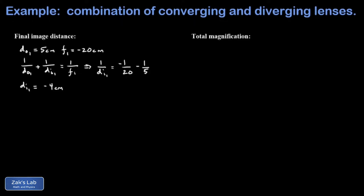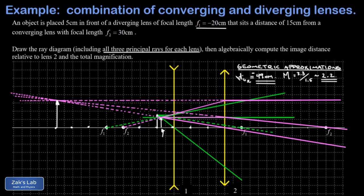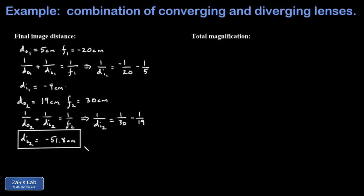Now I need to use that first image as the object for the second lens and figure out how far it is from the second lens. The separation between lenses was 15 cm, and this image used as the second object was 4 cm additional to the left of lens one, giving a total of 19 cm from lens two as DO2. The focal length for the converging lens was 30 cm. Plugging into the thin lens equation: one over 30 minus one over 19, taking the reciprocal gives a final image distance of negative 51.8 cm. We approximated that as negative 49 cm from the ray diagram — a very small percent difference.